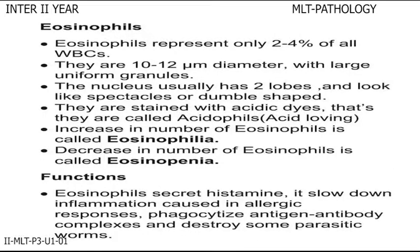Eosinophils represent only 2-4% of all WBCs. They are 10 to 12 micrometers in diameter with large uniform granules. The nucleus usually has two lobes and looks like a dumbbell or spectacle shape. They are stained with acidic dyes, that is why they are called acidophils, meaning acid loving. Increase in number of eosinophils is called eosinophilia and decrease in number is called eosinopenia. Functions of eosinophils: they secrete histamine, which slows down inflammation caused in allergic responses, phagocytize antigen-antibody complexes, and destroy some parasitic worms.